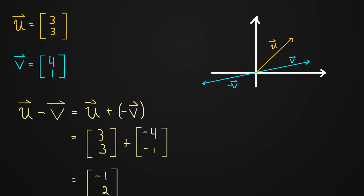And now to do this subtraction we're really just doing u plus negative v. So we're just going to take the head to tail approach. We go up u and then we add negative v.